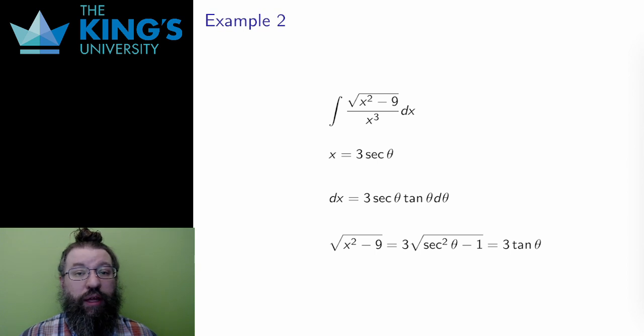Here's another example. This has the form of x squared minus a squared. The pattern for this type is a secant substitution, so x equals 3 sec theta with dx equals 3 sec theta tan theta d theta. The square root term becomes 3 tan theta. These are the three pieces of the substitution.